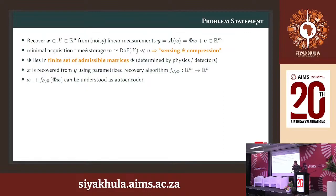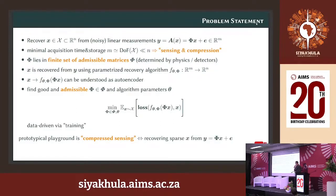We want to recover vector X using a parameterized recovery algorithm depending on parameters theta and on our observation model phi, which maps from small dimension back to large dimension. From the machine learning perspective, the overall mapping can be understood as a structured autoencoder. The task is to find a good matrix for acquiring the data and to tune the algorithm parameters such that some expected loss is small — in a data-driven way.